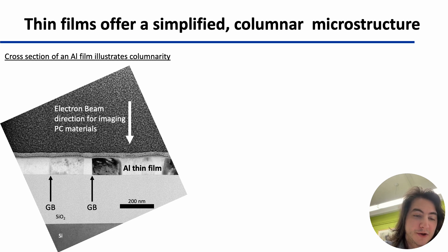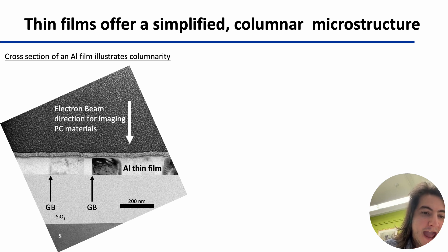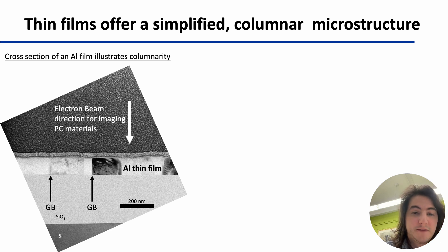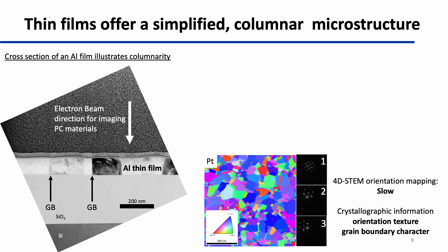This is in large part because of their columnar microstructure — that is to say that their grain boundaries span the full thickness of the film and are perpendicular to the surfaces of the film, meaning their plane normals are perpendicular to the traces of the grain boundary. This means that when we take orientation maps by scanning an electron beam and indexing each point, we're able to reconstruct not only orientation texture but also the grain boundary character in all five parameters for every grain boundary observed in the field of view.